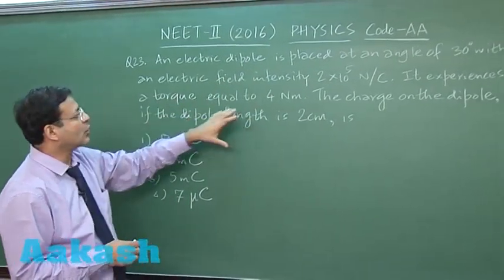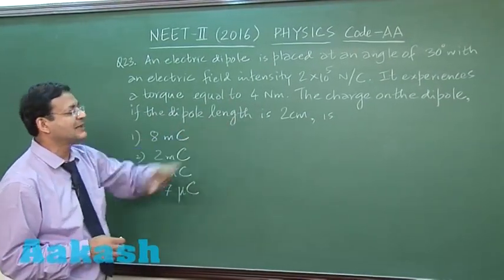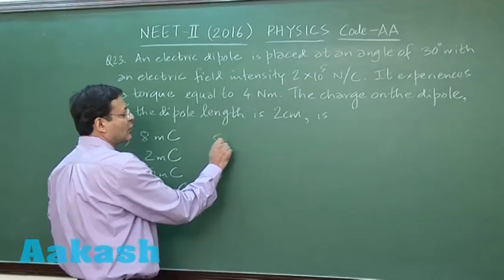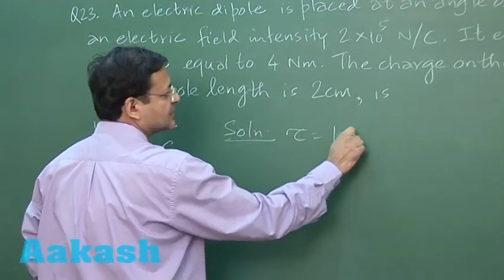It experiences a torque equal to 4 Newton meter. That is given. The charge on the dipole, if the dipole length is there. So you see, torque is equal to p cross E, that is p E sin theta.